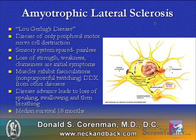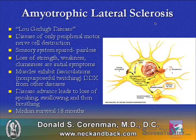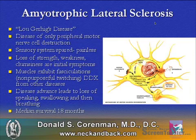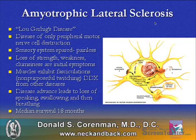Amyotrophic lateral sclerosis is also called Lou Gehrig's disease. It's a disease of only the peripheral motor nerve cells; therefore, there's no sensory involvement, and it is a painless disease. Somebody who has pain associated with weakness typically does not have Lou Gehrig's disease. The symptoms are loss of strength, weakness, and clumsiness. One of the hallmarks of this disease is fasciculations, or non-purposeful twitching, which differentiates it from other neurologic diseases. As the disease advances, patients lose the ability to speak, swallow, and then breathe, and the median survival for this illness is 18 months.